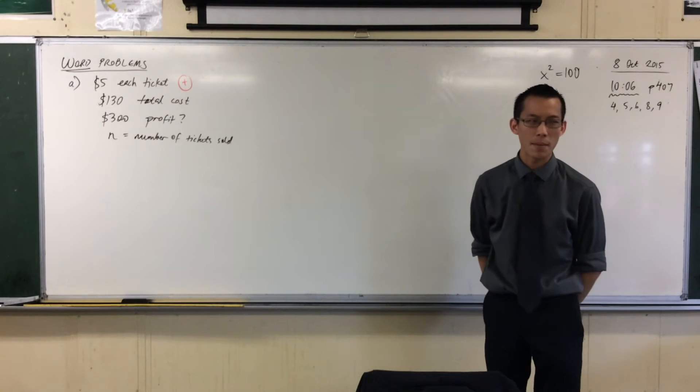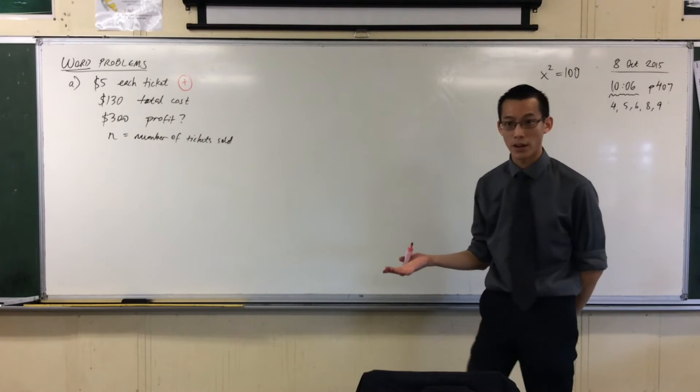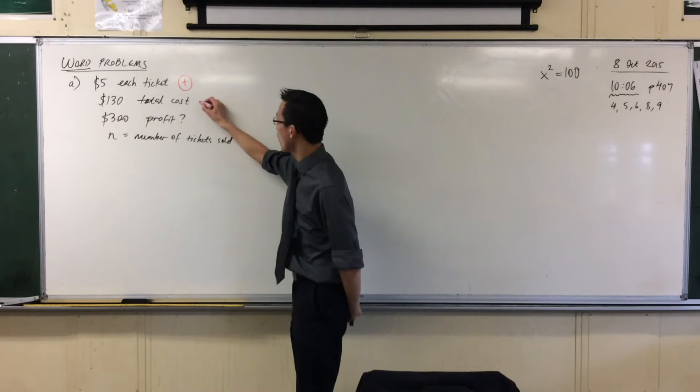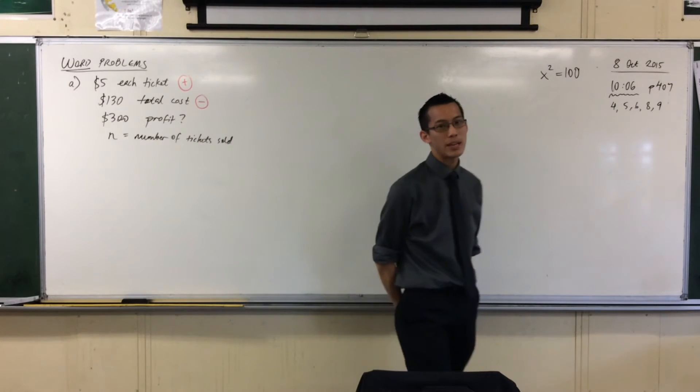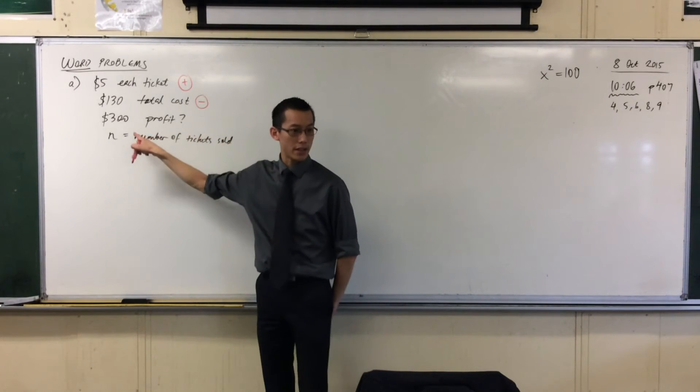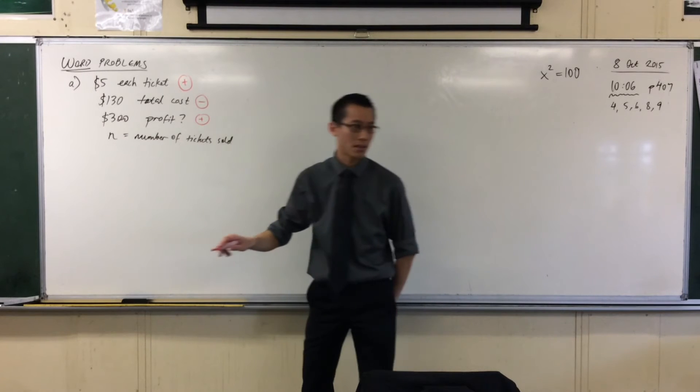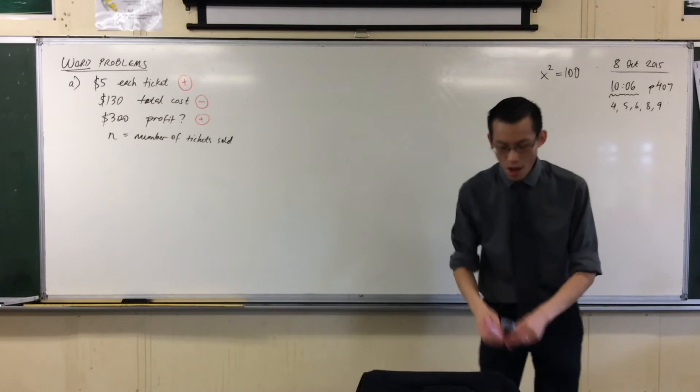Now you can kind of see what's happening next, right? That $130, the cost, where's that money going? It's going out. We're losing this money. So it's going to get subtracted. This $300 is a profit. So I want that to be a plus. You okay with that?